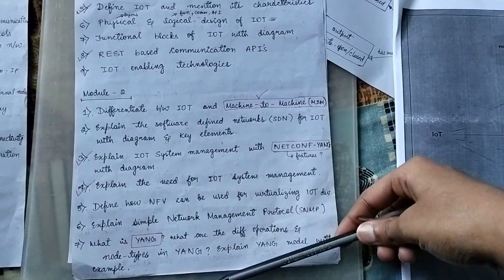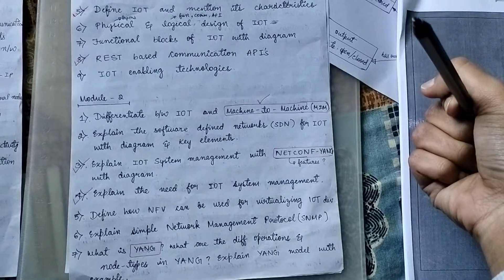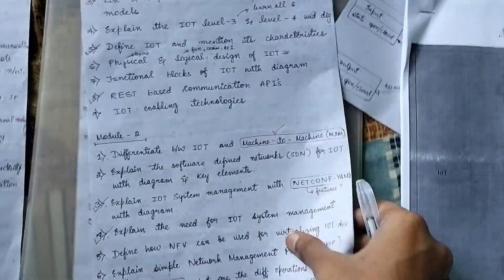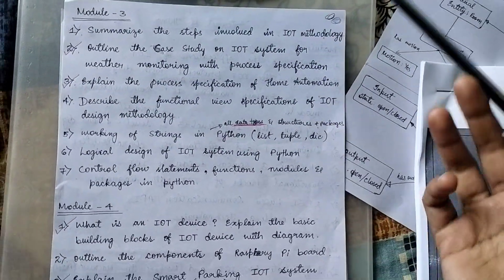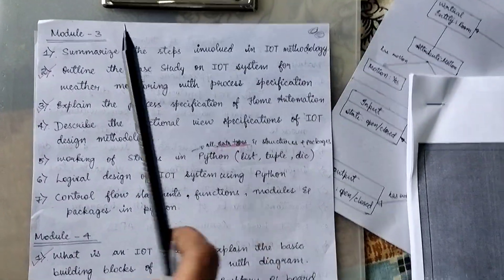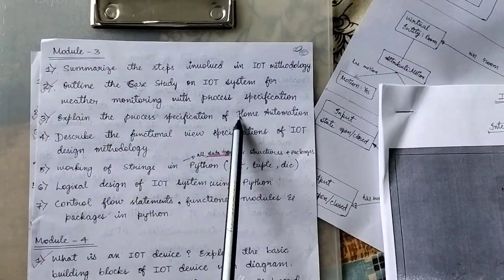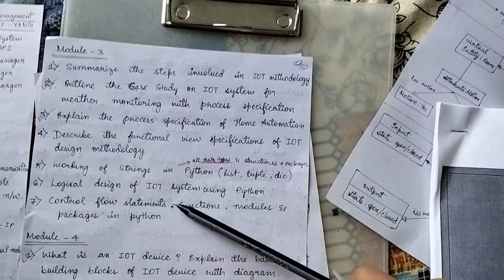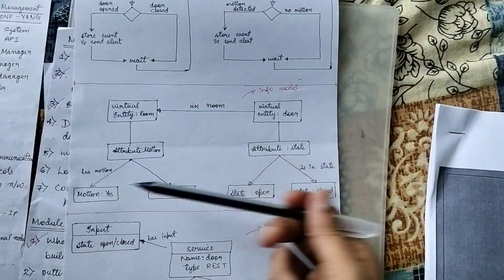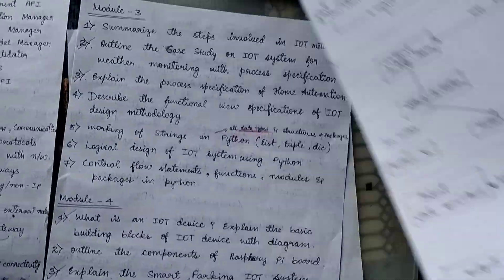I'm giving everyone two or three questions per module that I'm going to learn. Third and fourth module are the easiest - I thought they were difficult but they're not. They have two case studies: weather monitoring and home automation. For all the case studies in almost every module, the diagrams are almost the same type - same for the majority of questions.